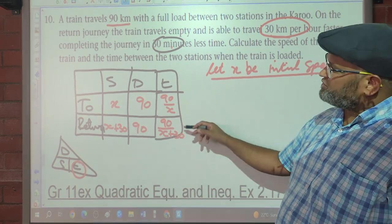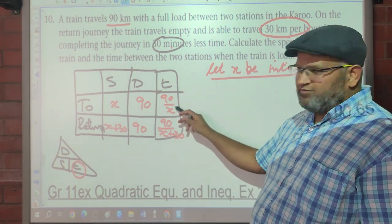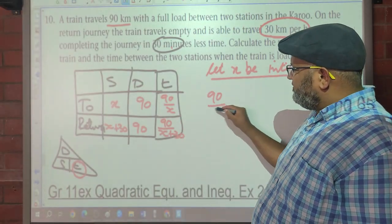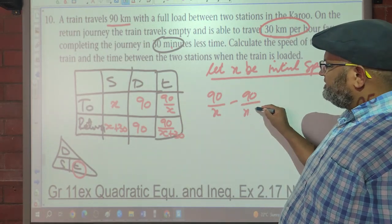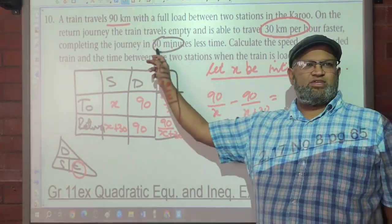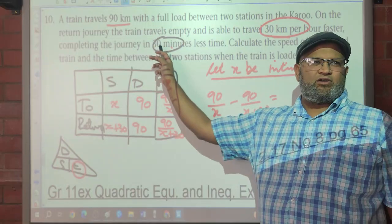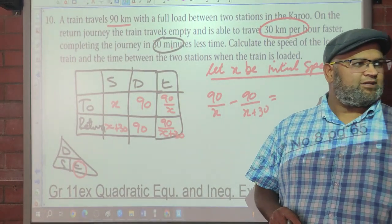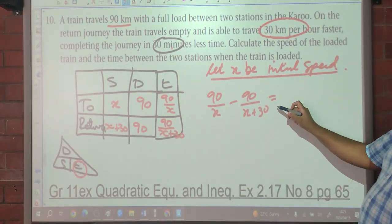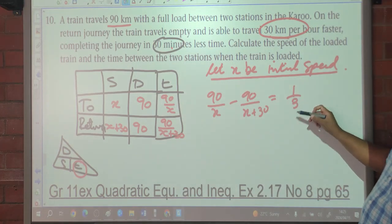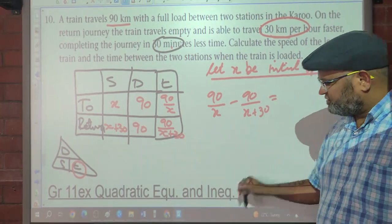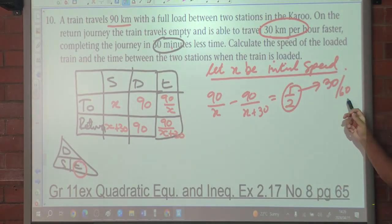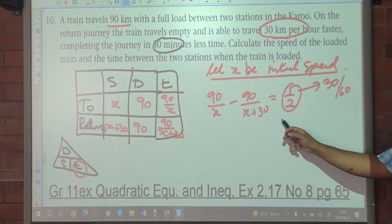The first leg takes longer, so: 90 over X minus 90 over (X plus 30) equals 30 minutes. I'm going to write this in hours because speed is in km/h, so that equals 30 over 60, which is 1 over 2. The LCM is 2X(X plus 30).